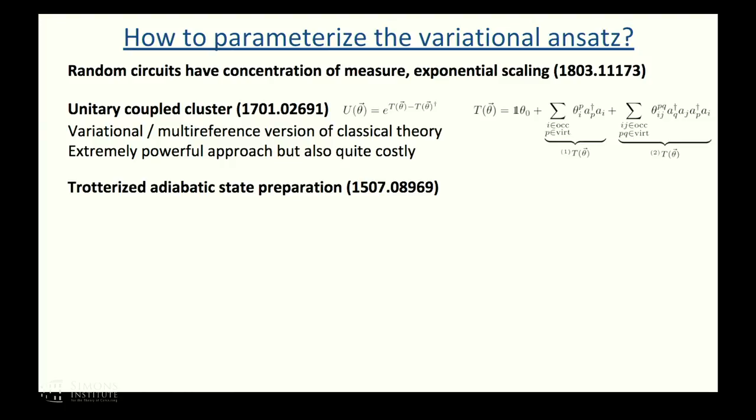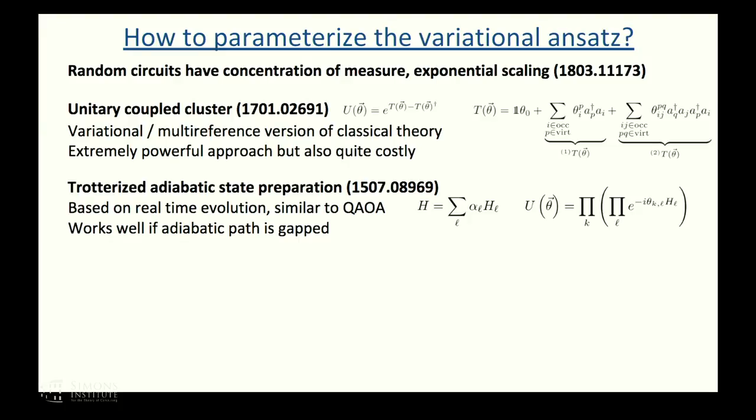Another approach which looks a bit more practical is what I would call trotterized adiabatic state preparation. Here, the idea is you pretend you're going to digitize adiabatic state preparation with trotter, but you say I don't have the budget for that many gates, so I'm just going to take not enough trotter steps. That seems to work pretty well in numerics, so I think that's kind of a promising approach. It has a lot of the structure of the Hamiltonian cooked into it. You have a good strategy for initial guesses. It's based on real-time evolution, similar in this sense to the quantum approximate optimization algorithm. Maybe a kind of trivial statement is it works well if your adiabatic path that you're digitizing is gapped. For instance, if you can start in some initial state that's in the same phase as the final state, and you can interpolate through a reasonable path.